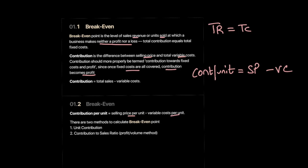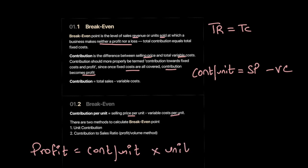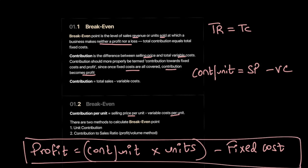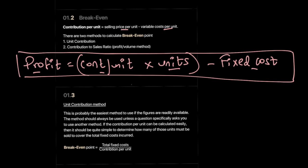Once the firm knows its contribution, it knows it needs to use this money to pay off its fixed cost, and the remainder becomes its profit. To calculate profit under marginal costing: profit equals contribution per unit — how much you earn on one single unit — multiplied by the number of units, giving total contribution, minus fixed cost. This shows the level of profit at different levels of output, and links how a change in units will bring about a change in profit.